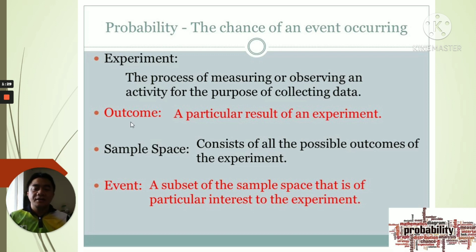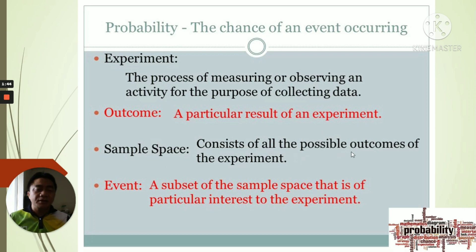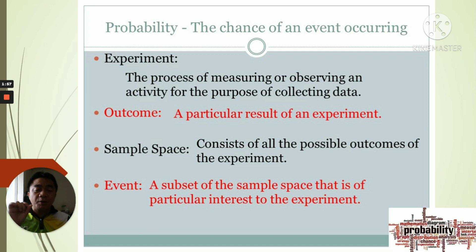In our definition: the experiment is the process of measuring or activity for the purpose of collecting data. The outcome is the particular result of an experiment. The sample space consists of all possible outcomes of the experiment. And the event is the subject of the sample space that is of particular interest — meaning, what are you looking for?